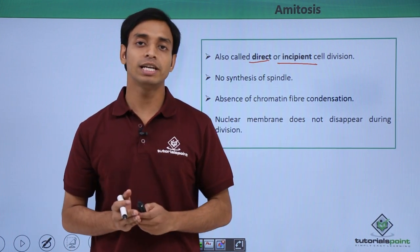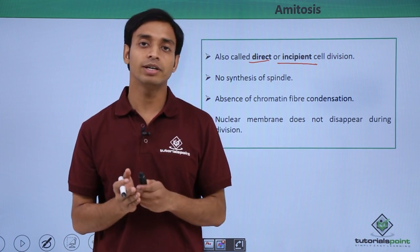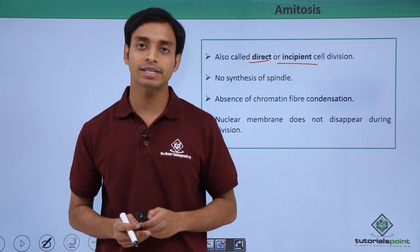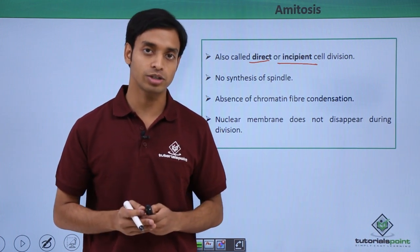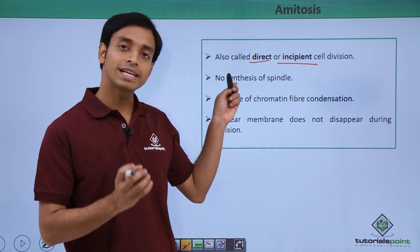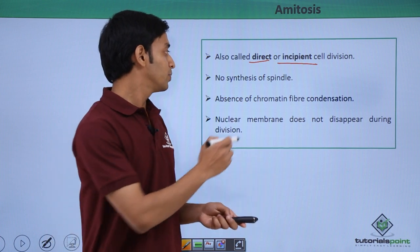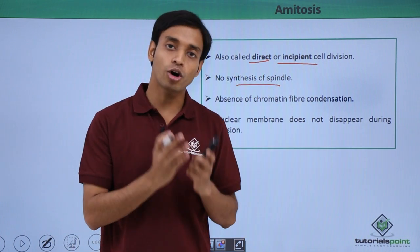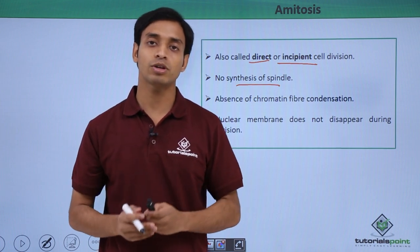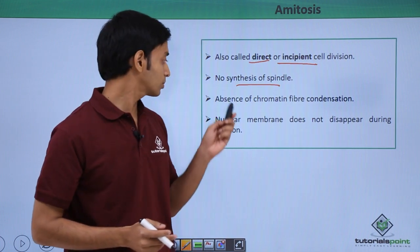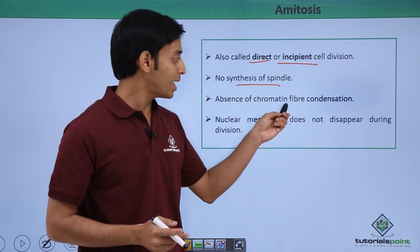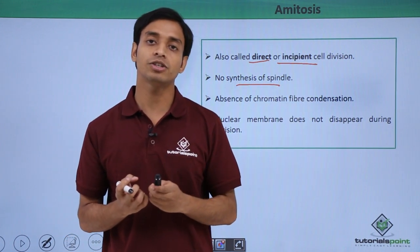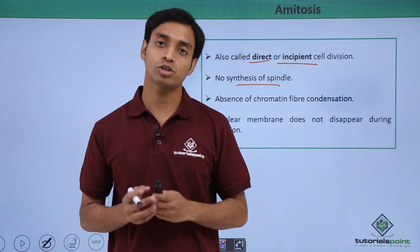Amitosis is a type of cell division which is slightly different from the normal types of cell divisions like mitosis and meiosis. Here the synthesis of spindle fibers does not take place, which is a normal event in other types of cell division. There is also an absence of chromatin fiber condensation during this process.